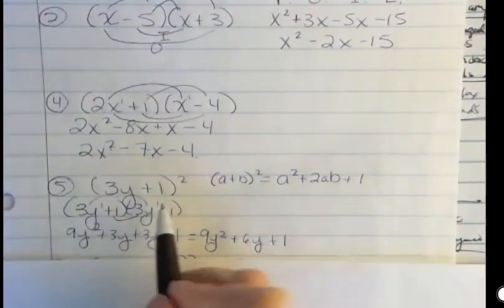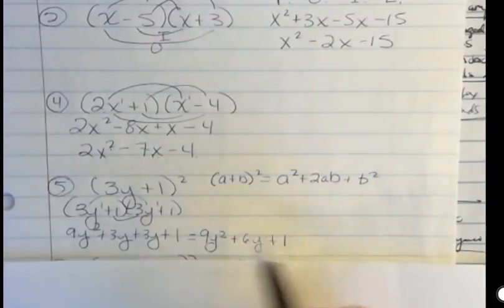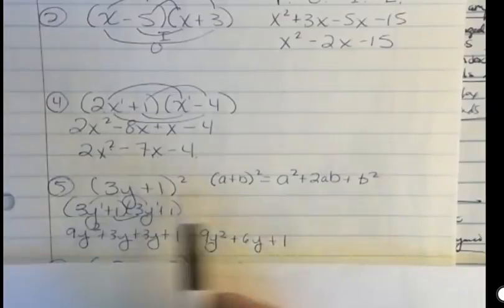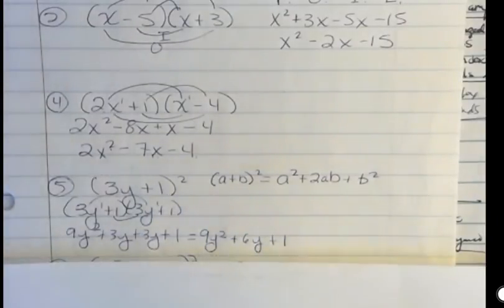And then plus b squared. Our last term was 1 because 1 times 1 is 1. So this is the shortcut formula, or you could FOIL it. It's up to you.